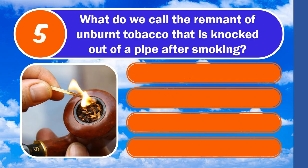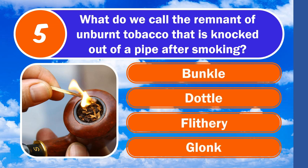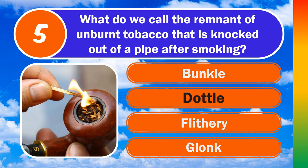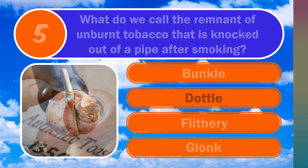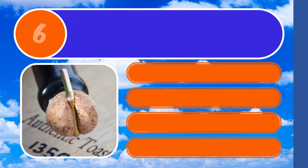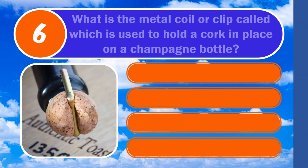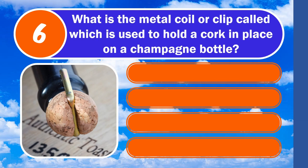Question number five: what do we call the remnant of unburnt tobacco that is knocked out of a pipe after smoking? Is it Bunkle, Dot Hole, Flithery, or Glonk? The answer is dot hole.